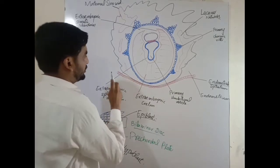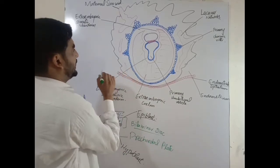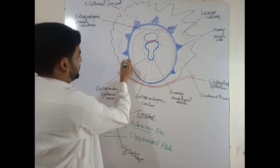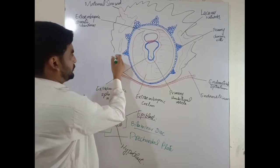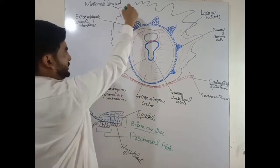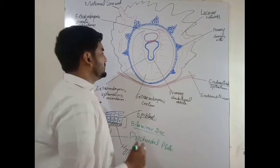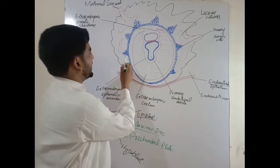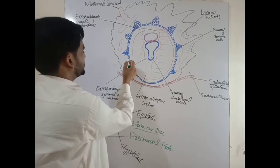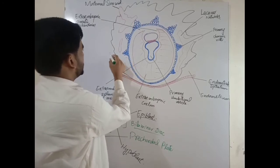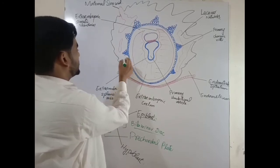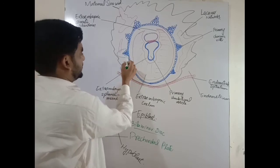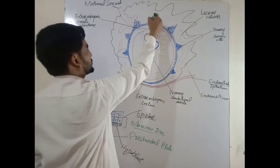These primary chorionic villi are very important. They develop into the syncytiotrophoblast — this is the layer of syncytiotrophoblast. These primary chorionic villi form columns with the syncytial layer, the syncytiotrophoblast.